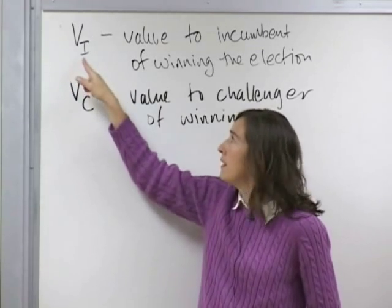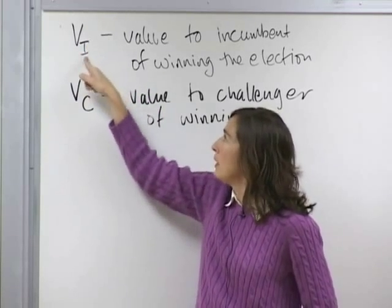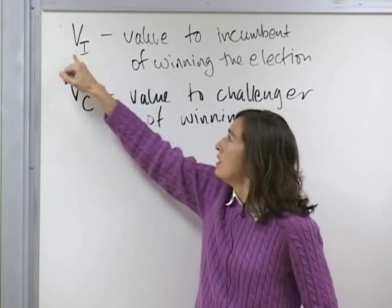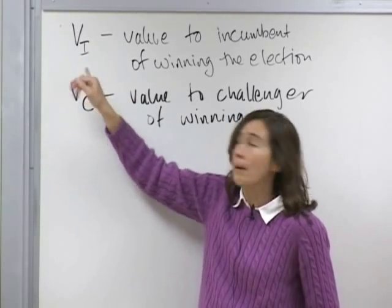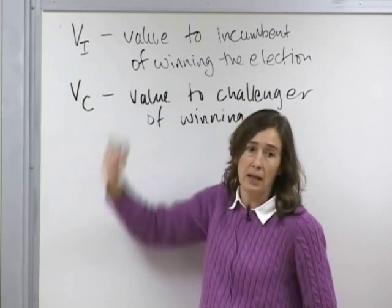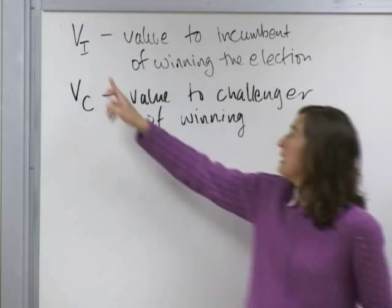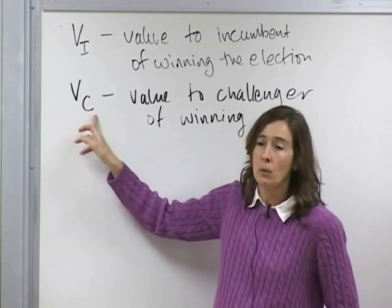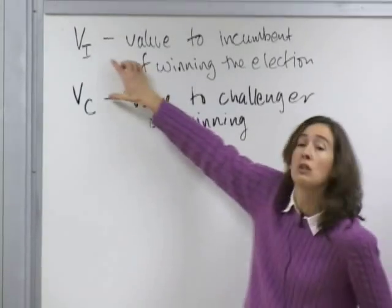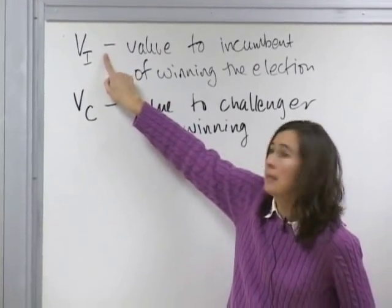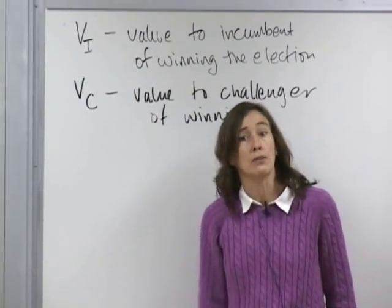I'm using subscripts to denote that this is the same concept applied to different players. We often use subscripts or superscripts to denote differences among related things. If we thought the values were the same, we could eliminate the subscripts. But since the incumbent may care more about winning than the challenger would, keeping the subscripts reminds us that these values might differ. Just because the incumbent has a very high value on winning doesn't mean that has to be true for the challenger.